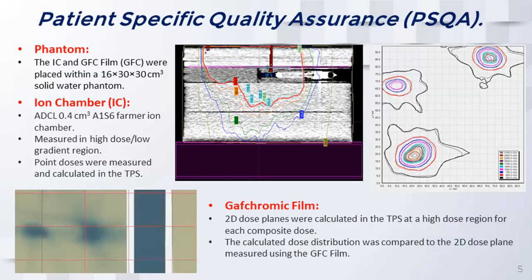The ion chamber and Gafchromic film were measured in a solid water phantom. There's an image of it with the ion chamber within the solid water phantom. We tend to measure within high-dose regions with a low dose gradient. The Gafchromic film was also measured in that solid water phantom within a particular plane — it's a 2D dose distribution.